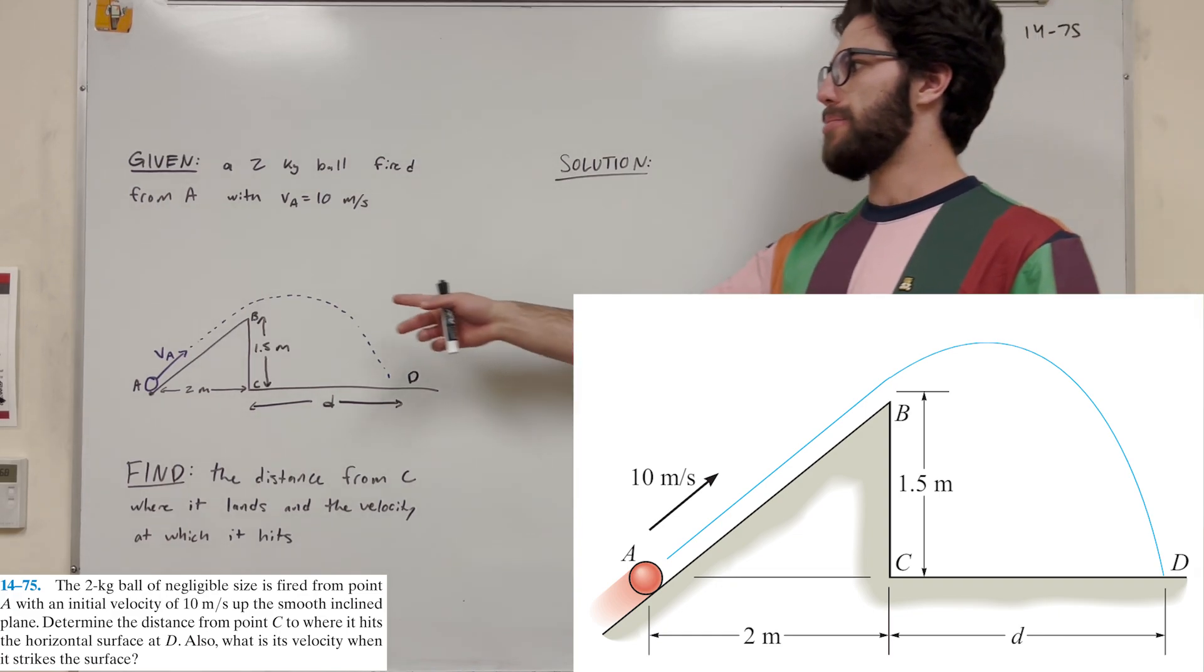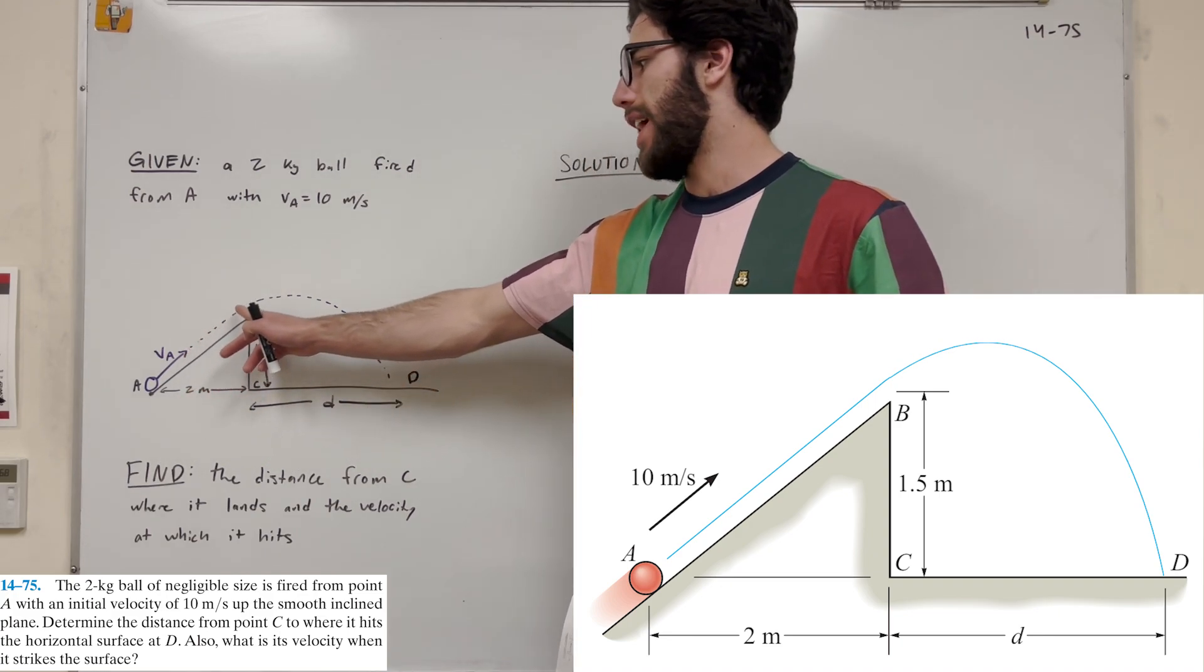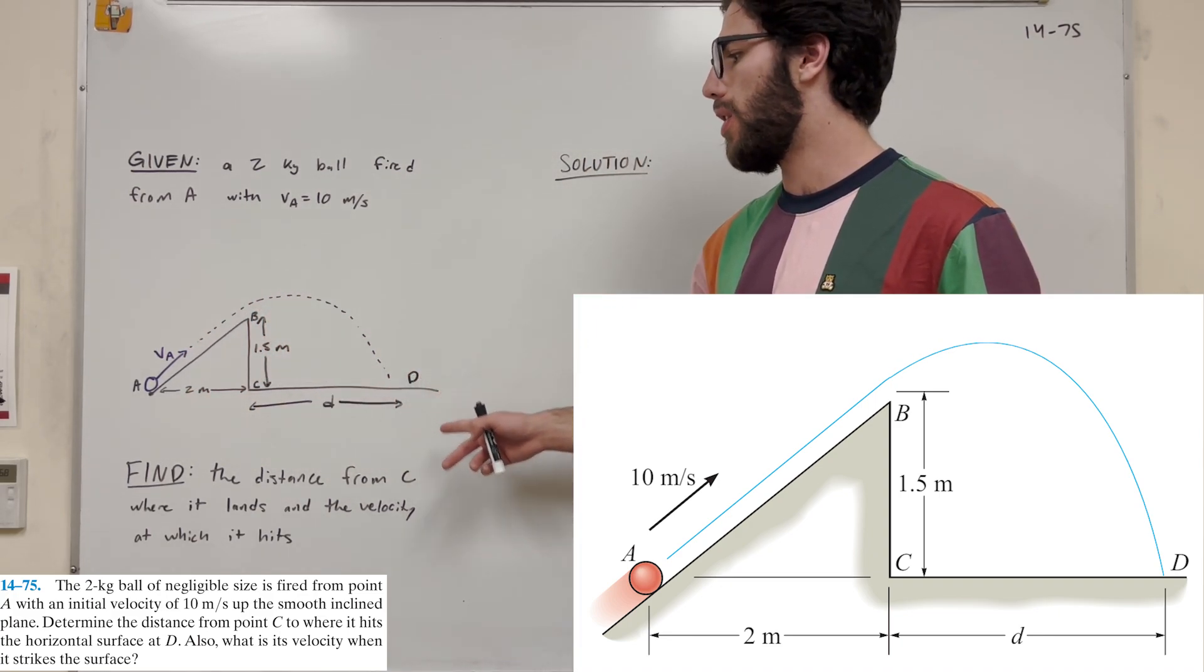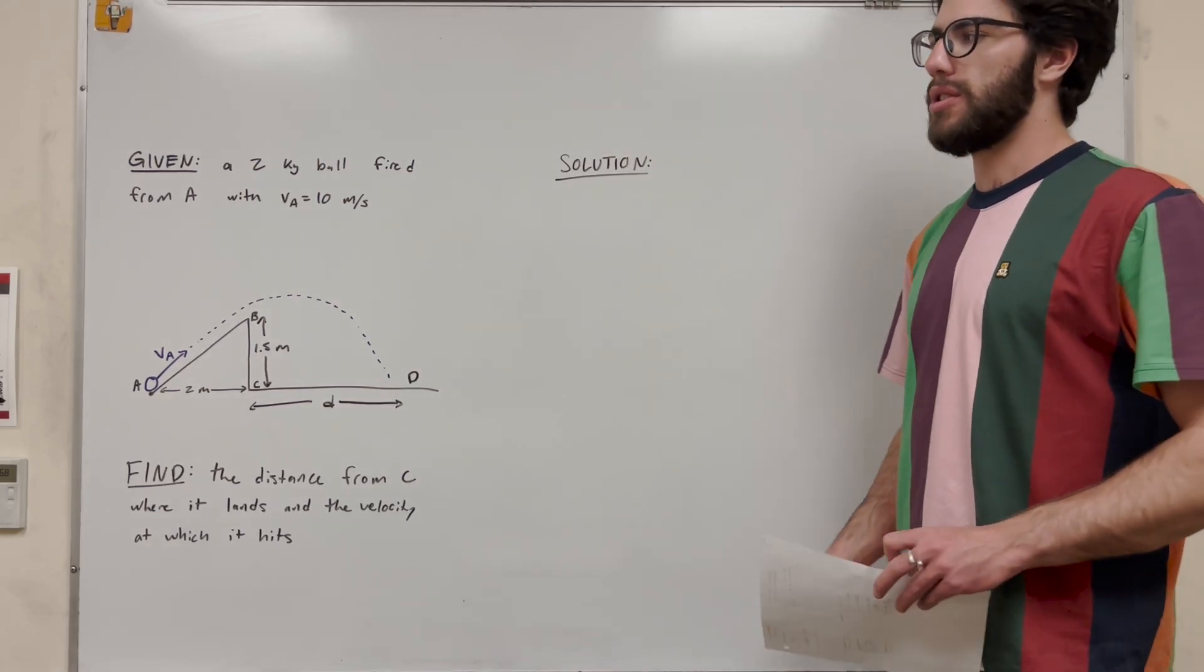So we have this two kilogram ball, and it's fired from A at 10 meters a second, and it's going to go up the ramp, flying off at B, and it's going to land this distance away from the wall. So our goal is to find that distance and the velocity which hits the ground.